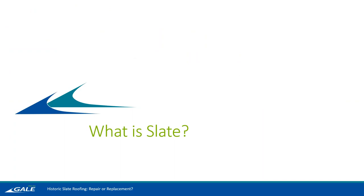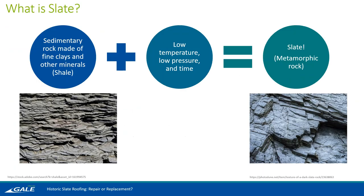Starting at the very beginning: what is slate? Slate is a metamorphic rock originally formed from a sedimentary rock called shale. Thinking back to grade school, we have three different types of rocks. Sedimentary rocks are formed from sediments building up over time. Igneous rocks are formed from lava. And then metamorphic rocks are either sedimentary or igneous rocks that are exposed to temperatures and pressures that cause their composition to change. Slate is one of these.